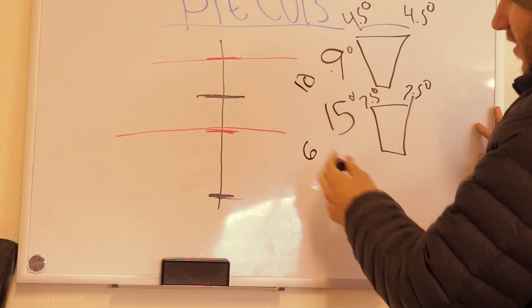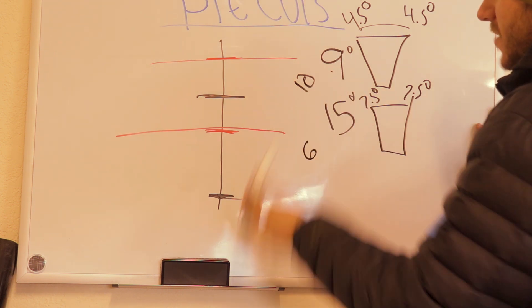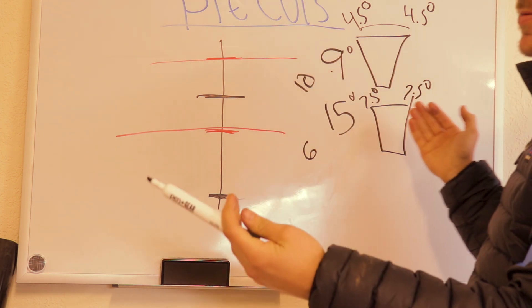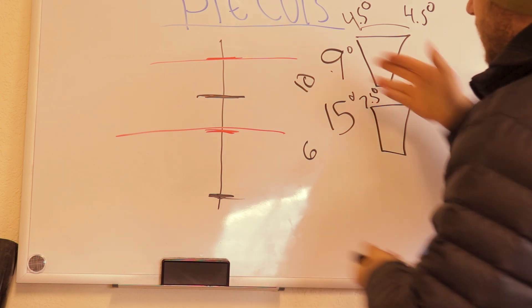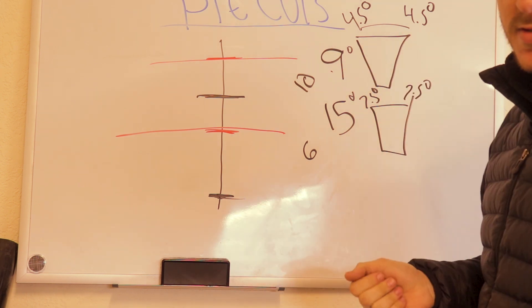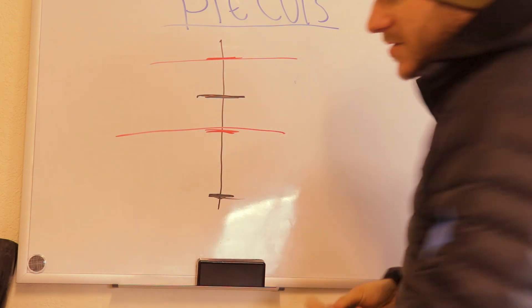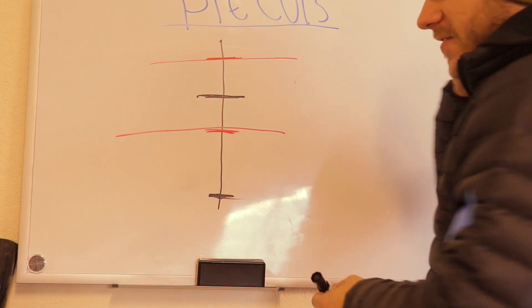15 times six equals 90, nine times 10 equals 90. So all you'd have to do to figure out what your bend is going to be is divide it by nine or divide it by 15. And that gives you the amount of pie cuts you need. So, let's just pretend we're going to do 15 degrees.